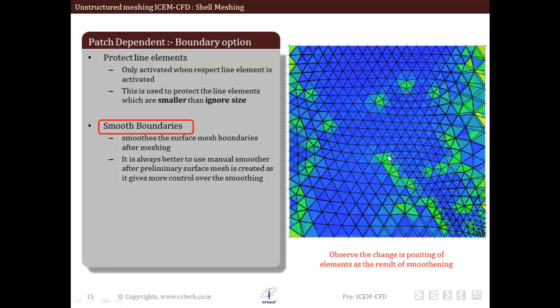Next is smooth boundaries. This is a dedicated smoothening option available in ICM CFD which we will see in lectures that will follow. This is only a preliminary option which smooths the surface mesh after meshing. Its effect can be observed in the figure, where we can observe the displacement of nodes as a result of the smoothening process. This is not really a useful option as users don't have control over the process and it is used very rarely.